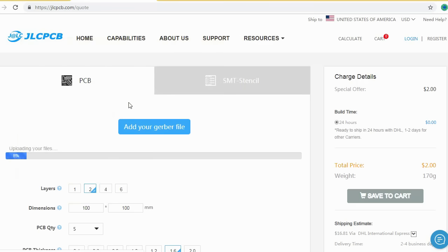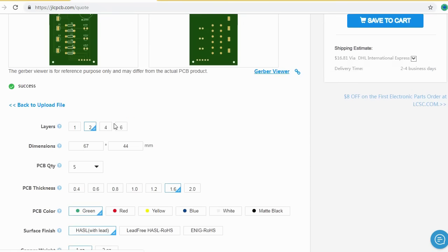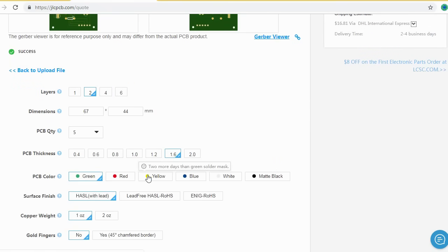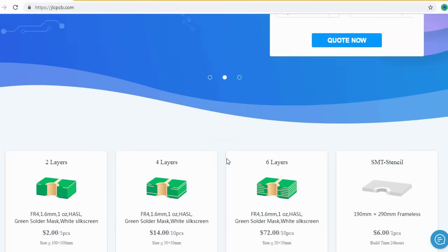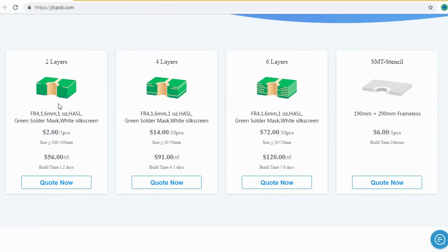Here you can order your high-quality PCB at a very cheap price, just $2. After that, you should select your desired PCB color from different colors and select the quantity of your PCB. Here you can order 2 layers, 4 layers, and 6 layers of PCB at a very cheap price.